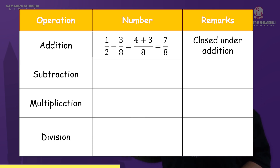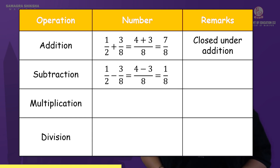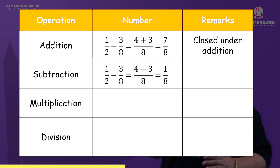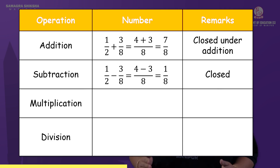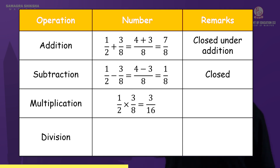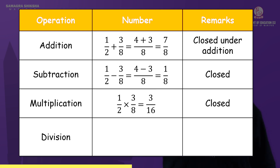Next, subtraction: 1 by 2 minus 3 by 8 equals 4 minus 3 divided by 8, which gives 1 by 8. Is 1 by 8 a rational number? Yes. So it is closed under subtraction. Next, multiplication: 1 by 2 into 3 by 8 — both are rational numbers. The product is 3 by 16, which is also a rational number. So it is closed under multiplication.